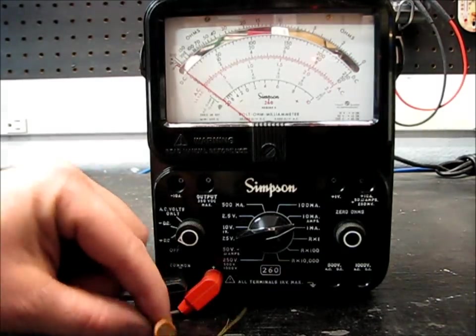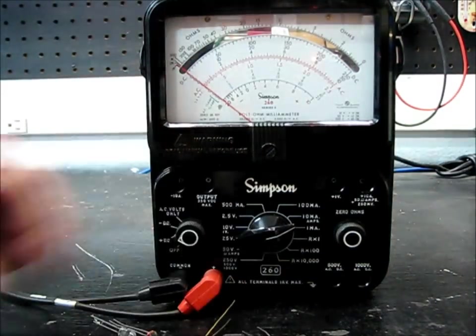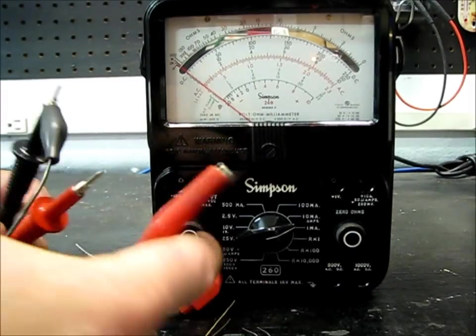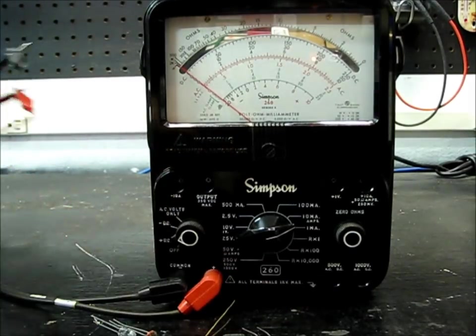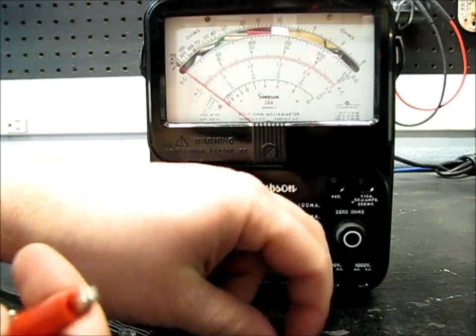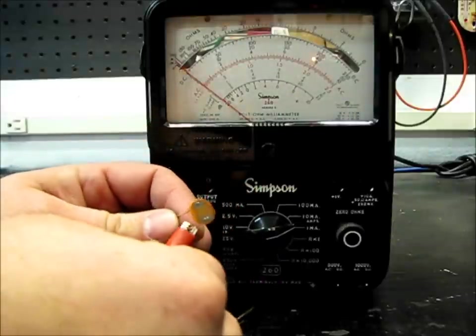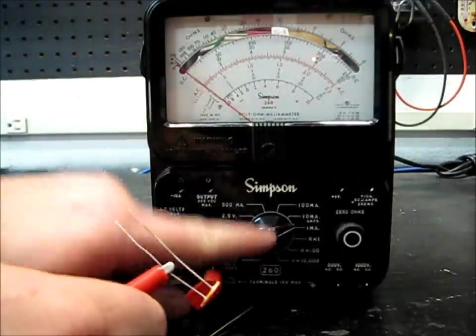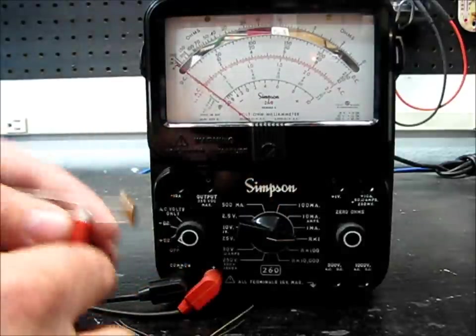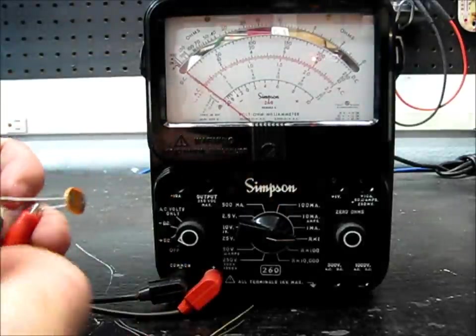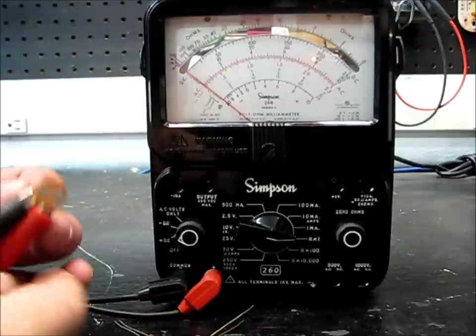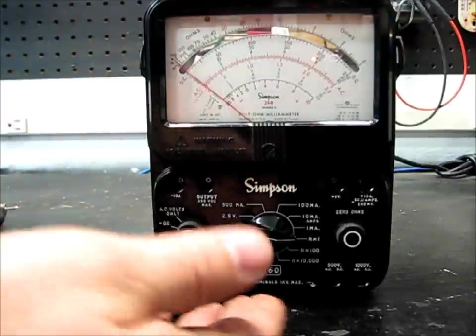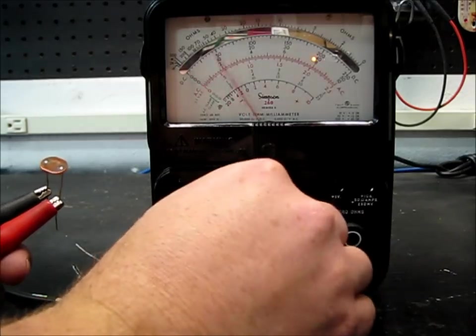Alright, let's show you how an LDR works. I have my leads here. I'm going to use some clips so I don't have to hold the leads on. Notice I have my ohmmeter set to Rx1. Let's turn it away—not seeing much. We'll do Rx100.